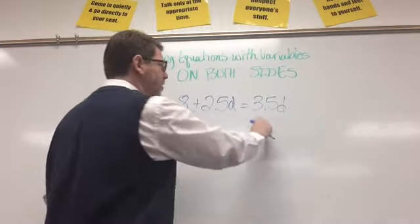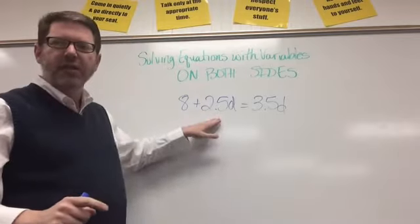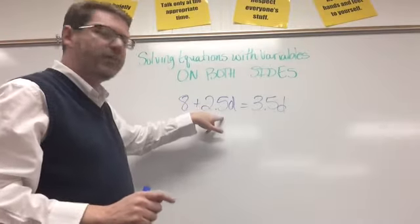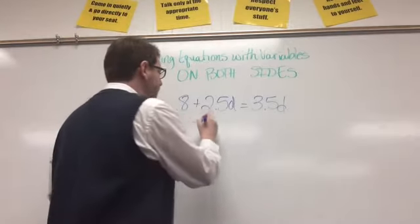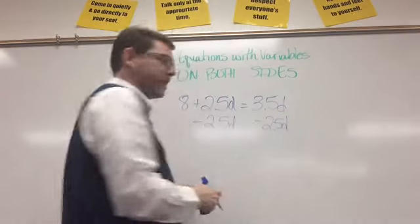So let's look: 2.5d and 3.5d. Which one is the smallest one? 2.5d. So I'm going to start with that one and I'm going to do the opposite. I'm adding 2.5d and the opposite of that is subtracting 2.5d. So I'm going to subtract 2.5d from both sides.